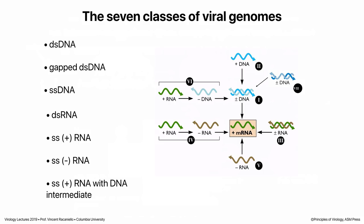Those are the seven classes: double-stranded DNA, gapped double-stranded DNA — the seventh form Baltimore missed because those viruses weren't known in the 70s — single-stranded DNA, double-stranded RNA, and single-stranded RNA, plus or minus, or plus with a DNA intermediate. For the first part of today, I want to go through each of these classes and explain how reproduction works — how you get to mRNA from each of these nucleic acids.